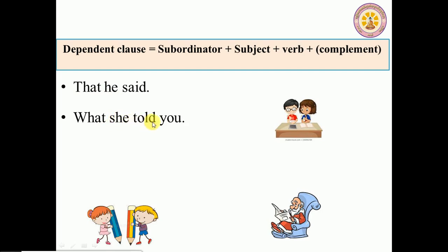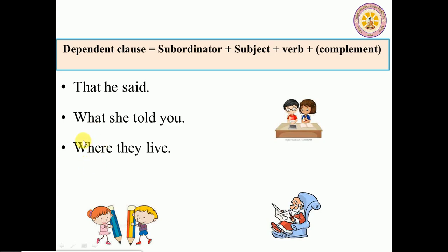'What she told you' — this is not a complete sentence. It is just a sub-clause because it's not complete; it's only part of a clause. One more: 'where they live' — we don't know what 'where they live' means on its own. This sentence starts with a subordinator connector. 'Which we need' — we don't know what we need. So all of these are sub-clauses.